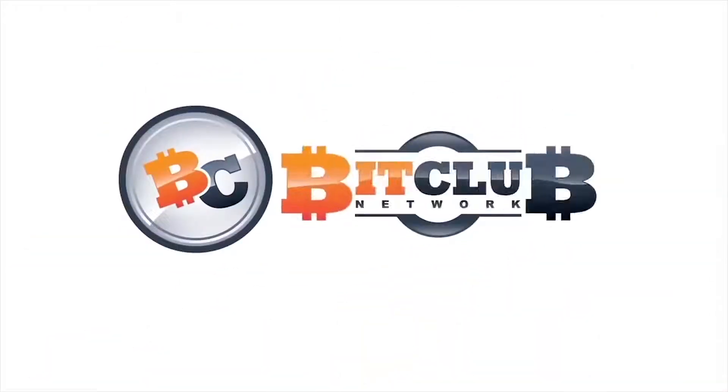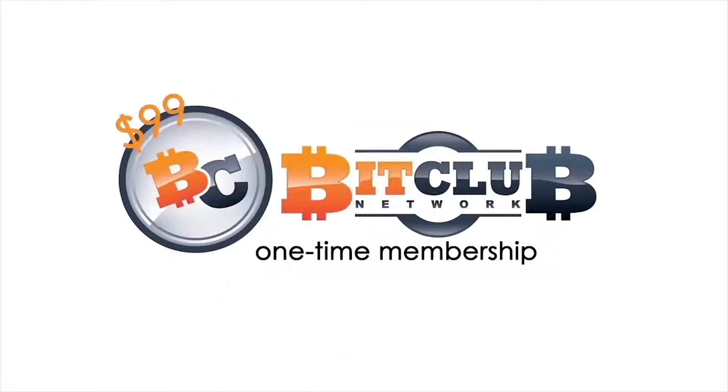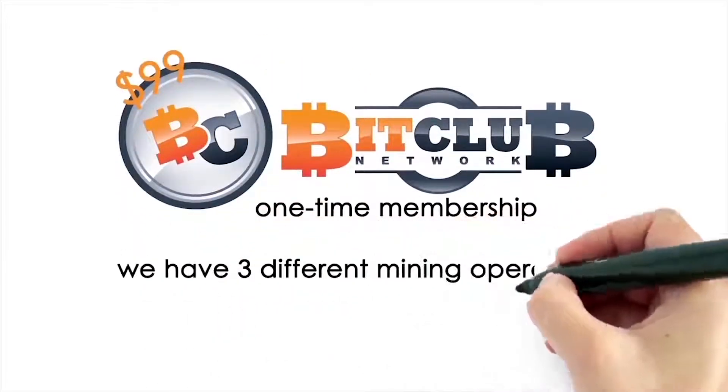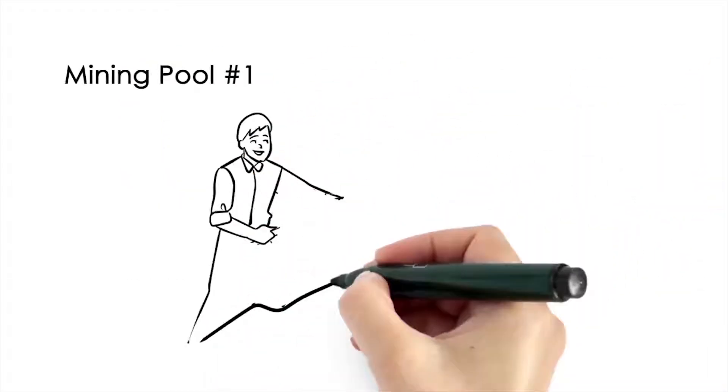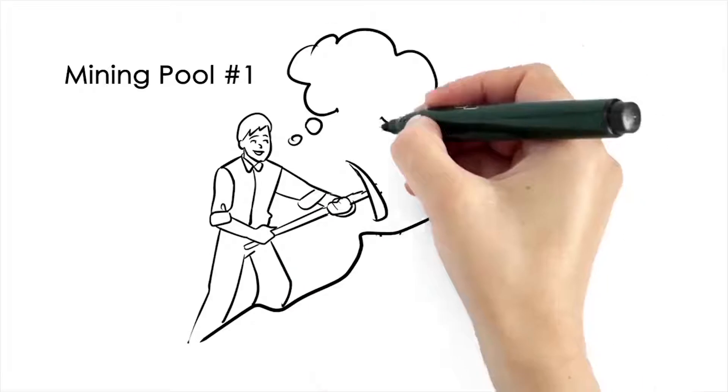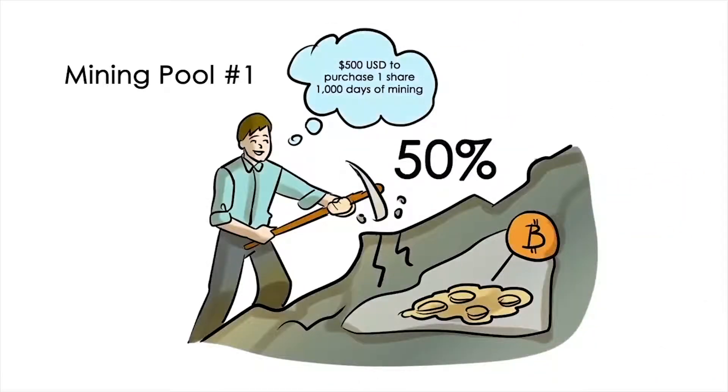How to get started? To join BitClub, you pay a one-time membership of $99. Once your membership is created, we have three different mining operations you can engage in. Mining pool number one: $500 US dollars to purchase one share that pays you for 1,000 days of mining. 50% of all profits will be paid to you on a daily basis, and another 50% will be used to help you purchase additional shares in this mine.